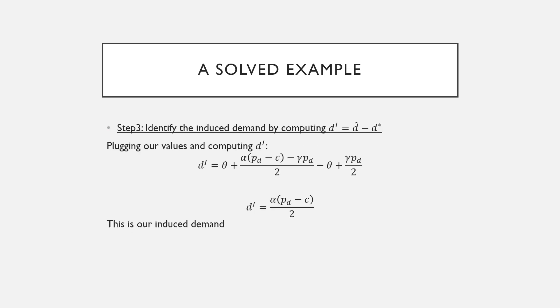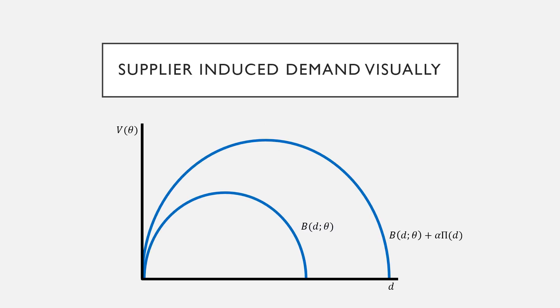Now to compute our induced demand we're just going to subtract these two from each other. Subtracting these two we get our induced demand which is α(P_d minus c) all over two. This is our induced demand. Now before I finish I want to provide some visuals, plotting what our value is and where our demands are.